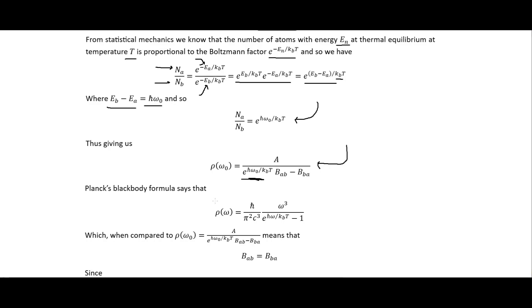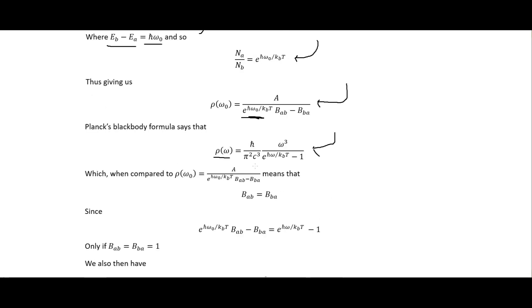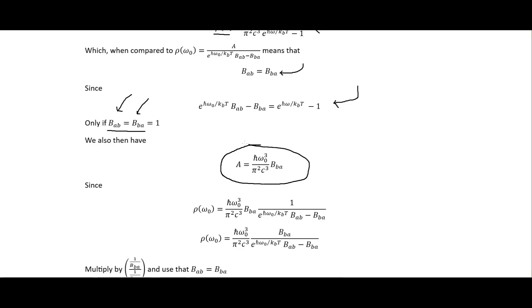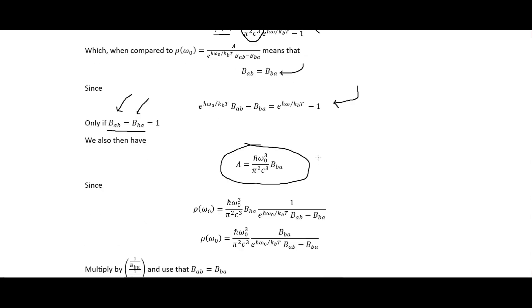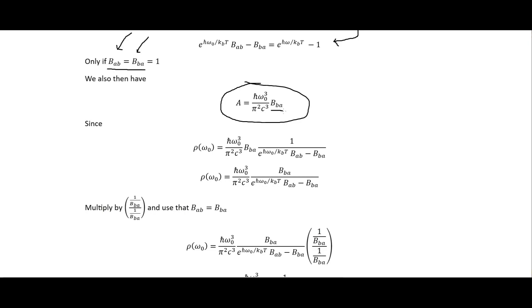Planck's blackbody formula gives the density of states, and comparing that to what we found, we see that B_ba equals B_ab — the two B terms are equal to each other. We can then make the substitution from the Planck blackbody radiation formula, setting that expression equal to A in terms of the stimulated emission coefficient.